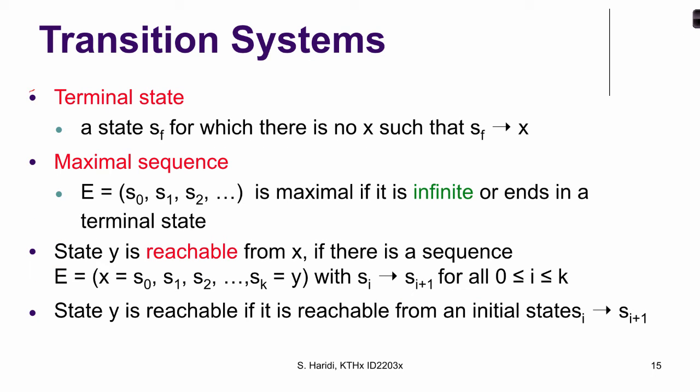A terminal state is a state where you are stuck and cannot move any further — formally, a state Sf for which there is no state x such that there exists a corresponding element in the transition relation. That is a final state.